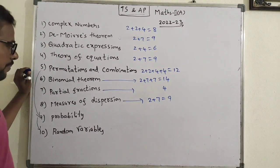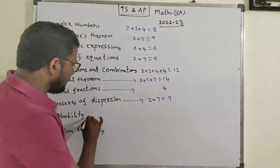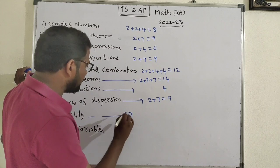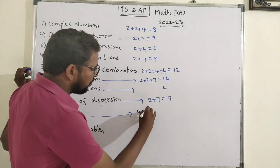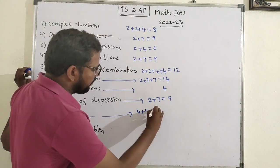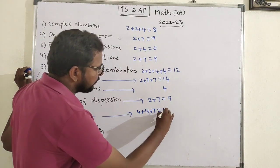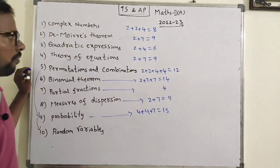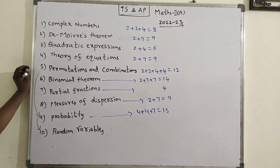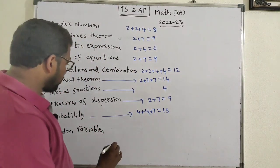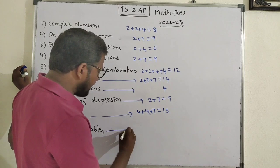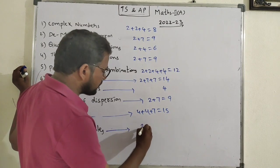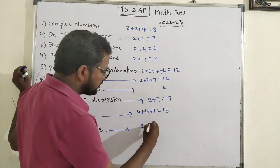Measures of dispersion: 2+7, total 9 marks. Probability is a highly weighted chapter — easy and important: 4+4+4+4+7, total 15 marks. Random variables and probability distributions: 2+7, total 9 marks.